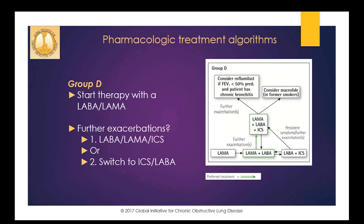Group D patients are the hardest to treat — they have severe symptoms impacting quality of life and experience frequent COPD exacerbations. Preventing future exacerbations and keeping patients out of the hospital reduces both costs and the patient's overall morbidity and mortality. For group D patients, guidelines recommend a LABA-LAMA combo as the starting point, as studies showed superior patient-reported outcomes compared to single substances. If a single bronchodilator is chosen, guidelines recommend a LAMA over a LABA because they prevent exacerbations better. LABA-LAMA combo was also superior to LABA-ICS in preventing exacerbations in this group D population.